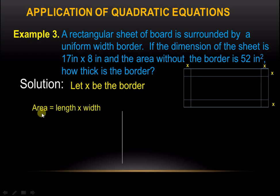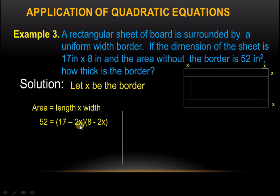The area without the border is 52. The length inside the border becomes 17 minus 2x — it's minus 2x because there are two borders on that side. Similarly, the width becomes 8 minus 2x, because there are two borders on that side as well.